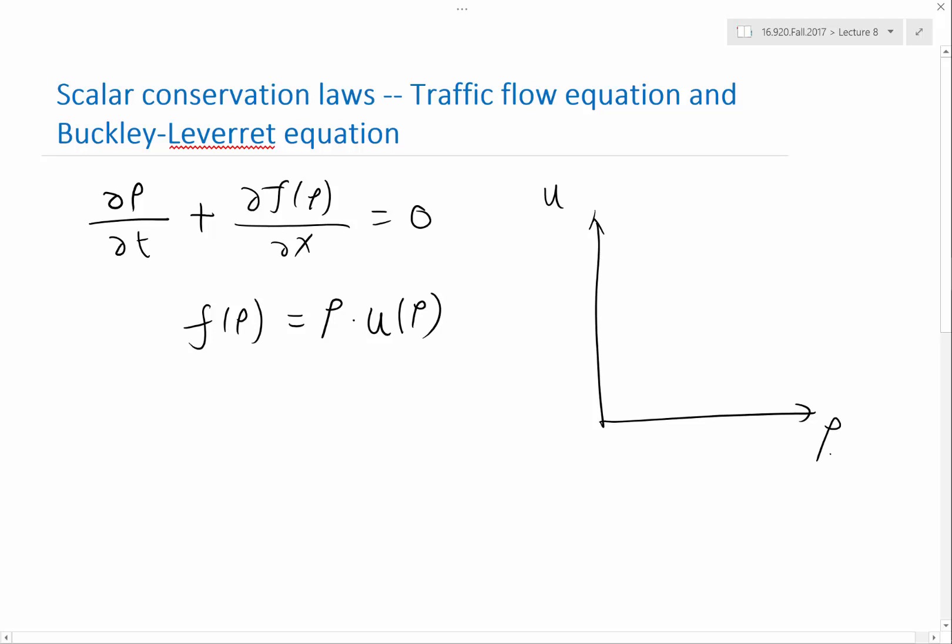For example, a common way to express u as a function of rho is that this is where people would normally drive if there is no other traffic. It's pretty much constant at a point where at some point my velocity would start to decrease because there is just too much traffic.